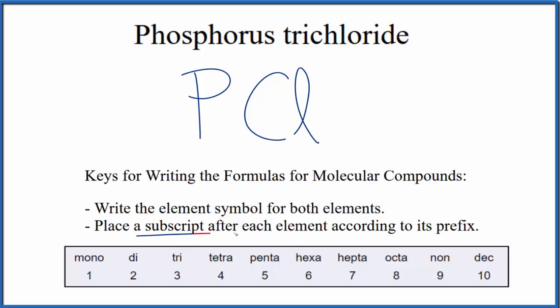Next we'll place a subscript after each element according to its prefix. When you look at phosphorus here in the name, there's no prefix. That means we have just one phosphorus atom. We don't write the one though by convention, we just assume that it's there.